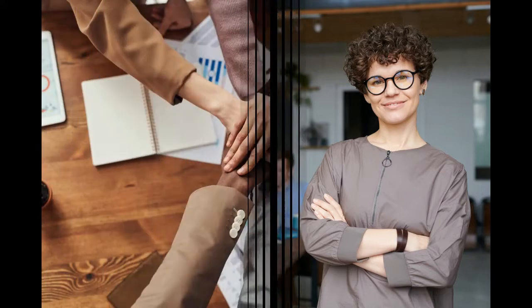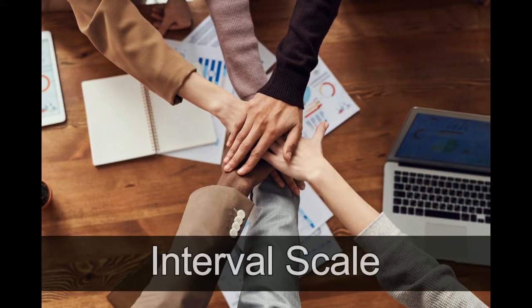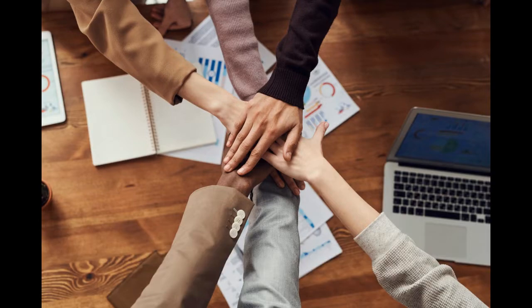Let us see what an interval scale is. An interval scale has ordered numbers with meaningful divisions. Temperature is an example of an interval scale — a difference of 10 degrees between 90 and 100 means the same as 10 degrees between 150 and 160. If you have meaningful ordered data, then your data is on the interval scale.